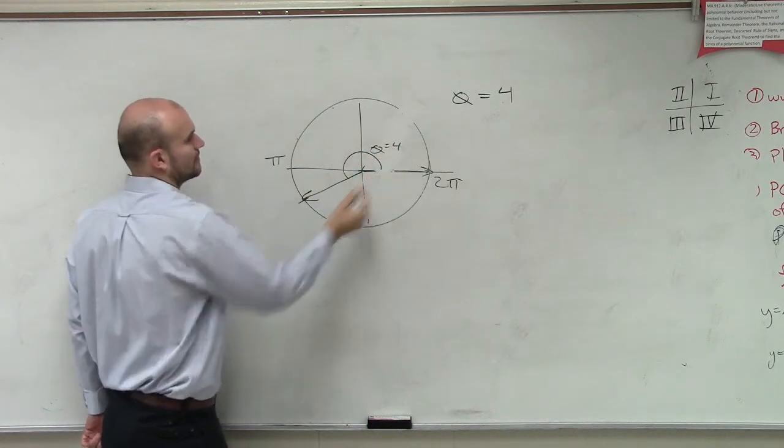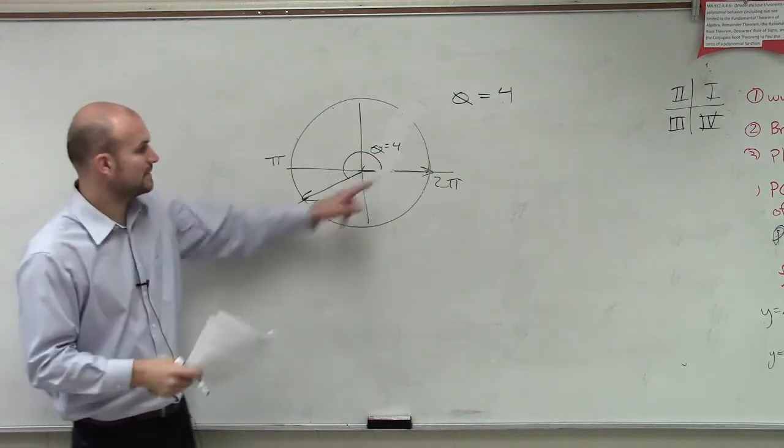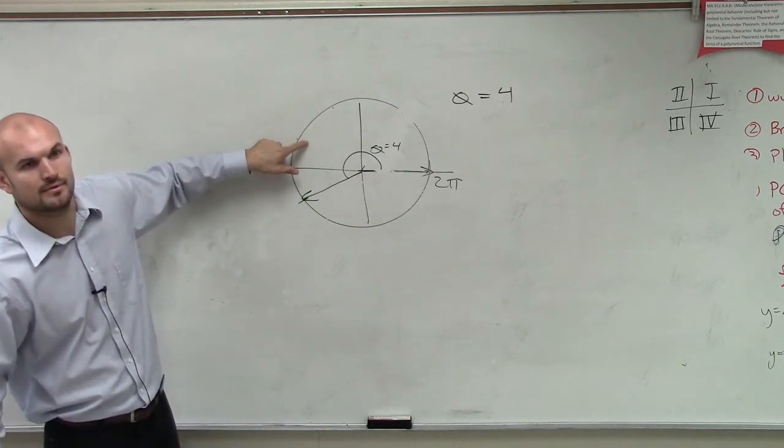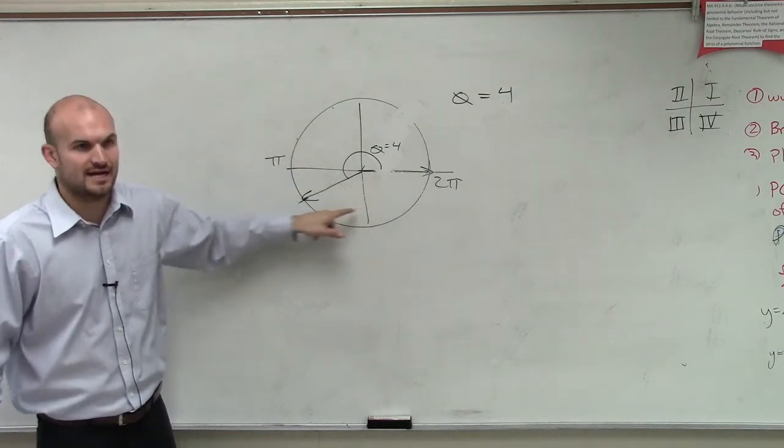What about like negative 4? Good question. So negative 4 would be here, but then you'd go in the negative direction, so it would be right about there.